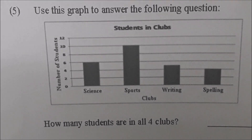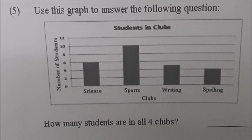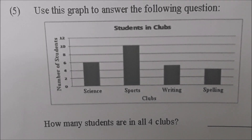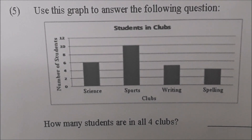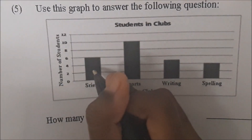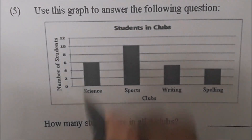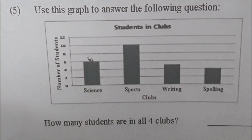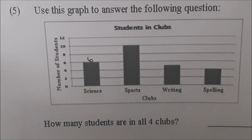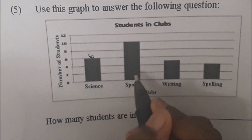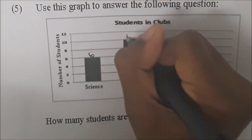Okay Sky, we are at number five now. Use the graph to answer the following question: how many students are in all four clubs? It's a bar graph dealing with students in clubs. The clubs are science — point to the science one for me, Sky. What number would you put for science? Six. Six students. Go to the sports club. What number do you put on top of that? Ten. Ten students.